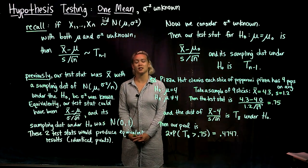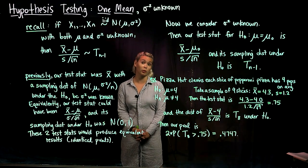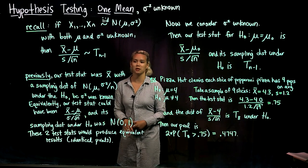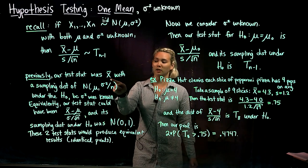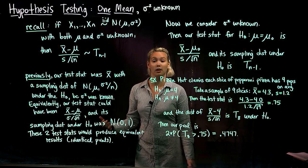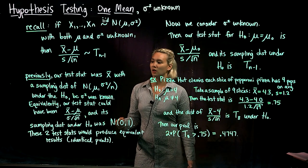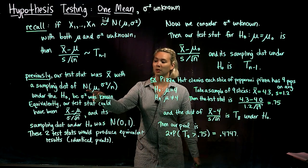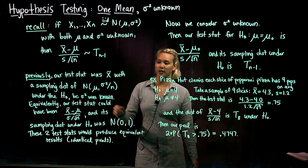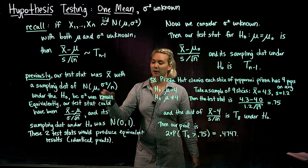Previously, we were doing hypothesis testing for a population mean when sigma squared was known. When sigma squared was known, we could say that our test statistic was x bar, and we would ask what the sampling distribution for that test statistic is under the null hypothesis. We figured out that the sampling distribution would be a normal with mean mu and variance sigma squared over n under the null hypothesis, where mu was given by the null hypothesis.